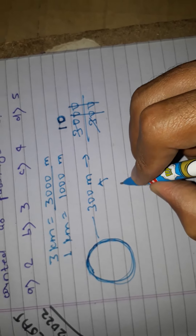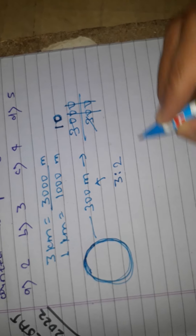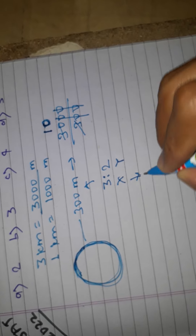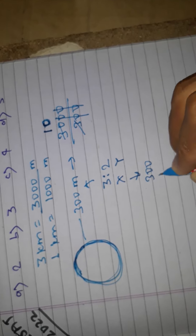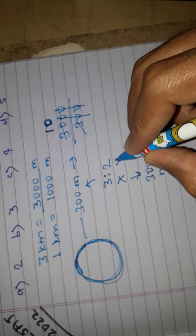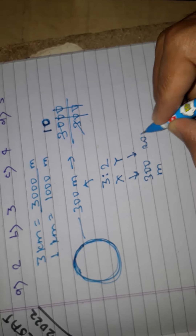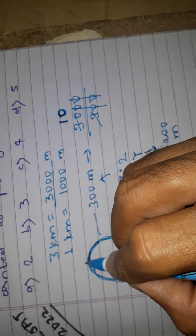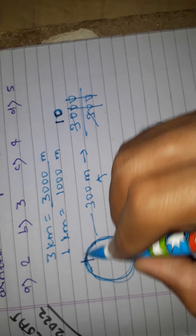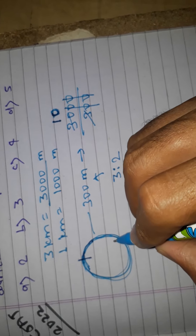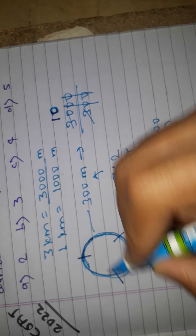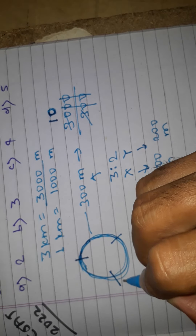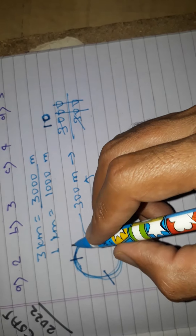The speed ratio of X to Y is 3 is to 2. This means when X completes 300 meters, Y completes 200 meters. If we divide the circle of 360 degrees into parts, we get three equal parts of 100 meters each — so 100 meters, 200 meters, and 300 meters marked on the circle.